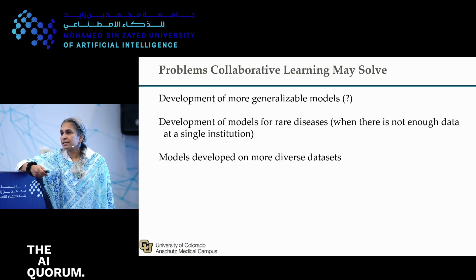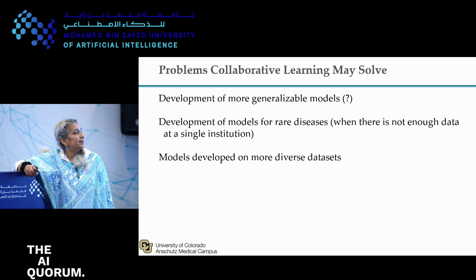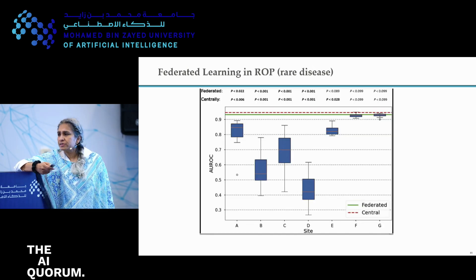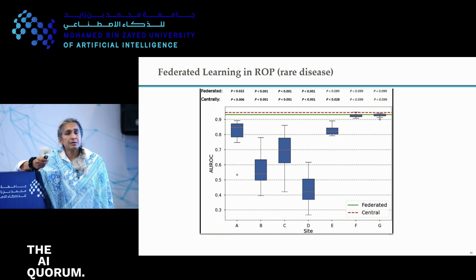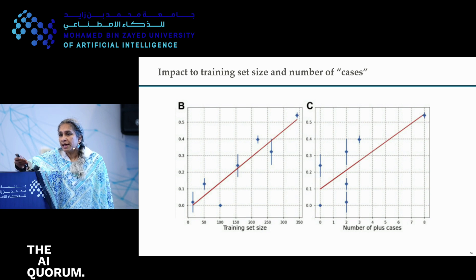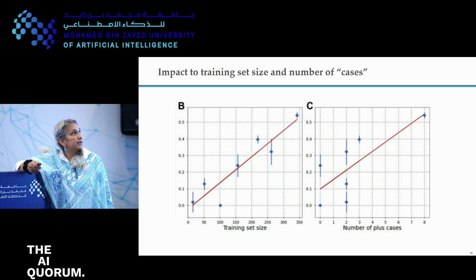The area we are particularly interested in is rare diseases — there's really not enough data at a single institution to build a model, so we definitely have to federate. Hopefully, allowing people to collaborate brings in more diverse datasets. We did an experiment with ROP, which is a very rare disease; some institutions have a very small number of patients, some have no positive cases. What we essentially showed is that by doing federated learning, we can get a model that works at least as well as a central model. A lot really has to do with training set size and the number of positive cases.